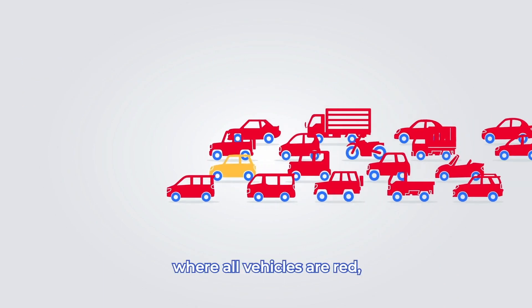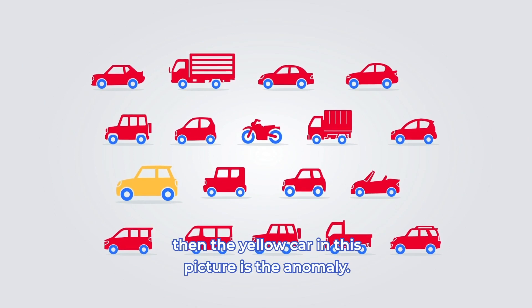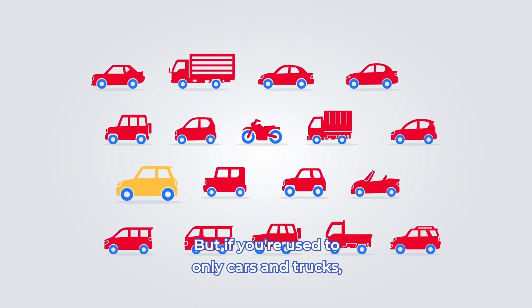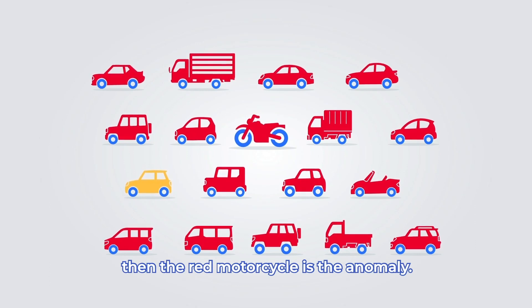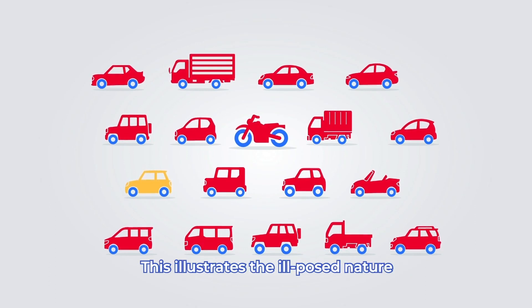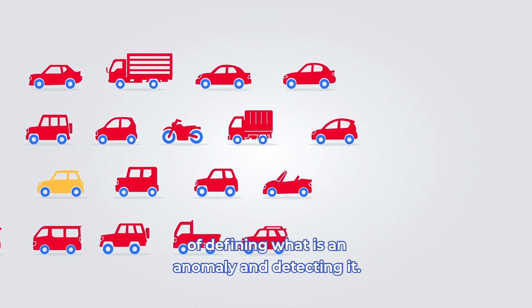If you're driving in a place where all vehicles are red, then the yellow car in this picture is the anomaly. But if you're used to only cars and trucks, then the red motorcycle is the anomaly. This illustrates the ill-posed nature of defining what is an anomaly and detecting it.